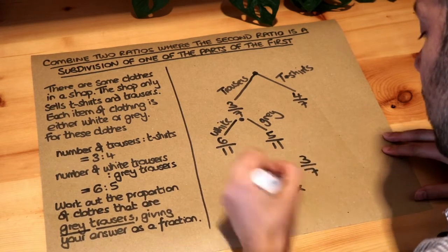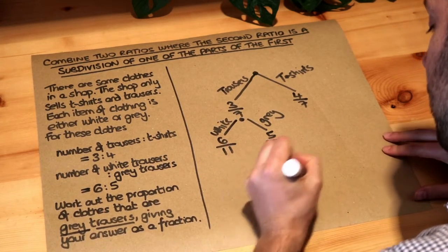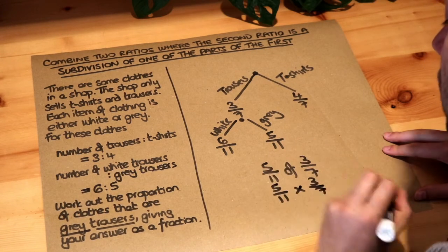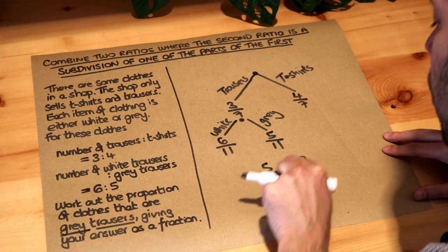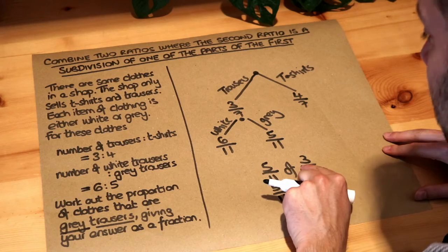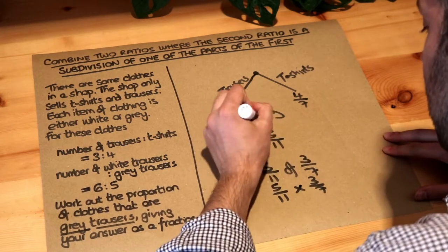Remember, with the word "of" we can change it into times. So we have 5/11 times 3/7 in order to find the 5/11 of the 3/7 of the clothes which are trousers. So it's just these two key fractions here.